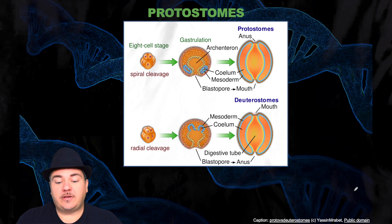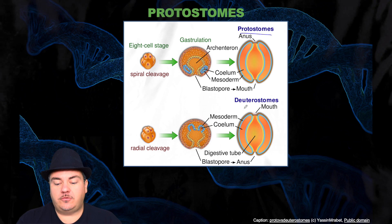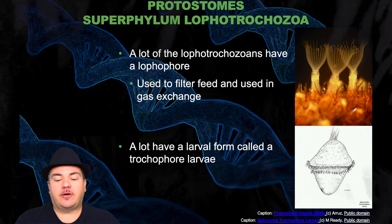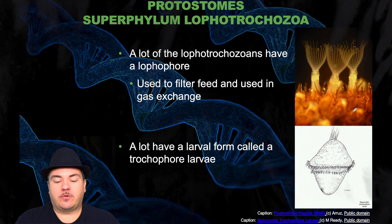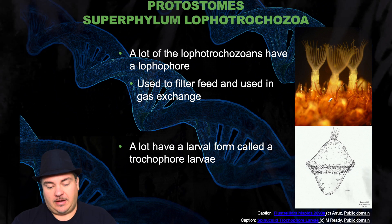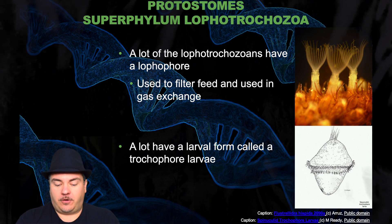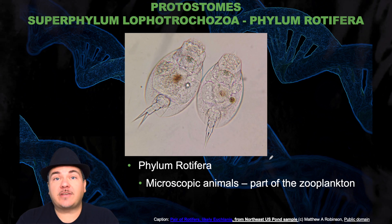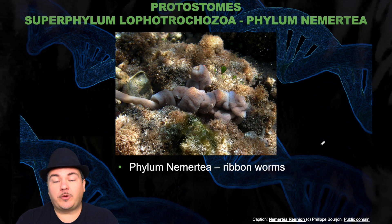Now we're going to talk about the protostomes. Recall the differences between protostomes and deuterostomes from the previous chapter. The first superphylum of the protostomes is the Lophotrochozoa. Many lophotrochozoans have a lophophore used for filter feeding and gas exchange, and many have a larval form called a trochophore larva. The first phylum within Lophotrochozoa is Rotifera — microscopic animals that are part of the zooplankton. Then we have the phylum Nemertea, which are the ribbon worms.